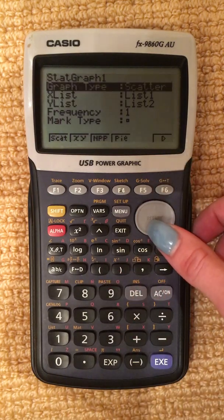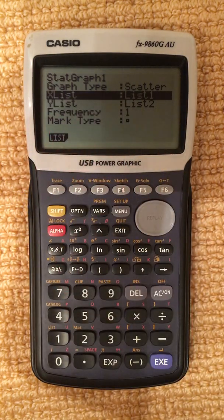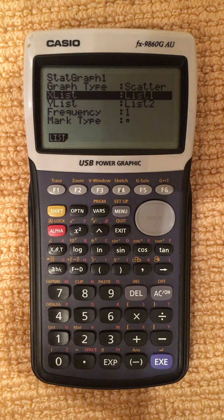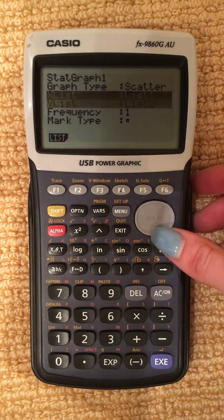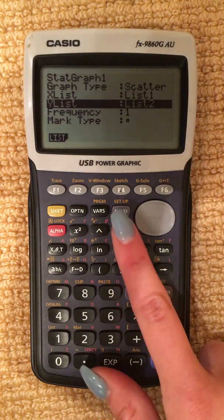Scroll down until it says X list. List 1. What this means is that in our List 1, we will be putting our X values and scroll down one more time. List 2. Our Y values. Easy done. Let's go back. To go back, press Exit.